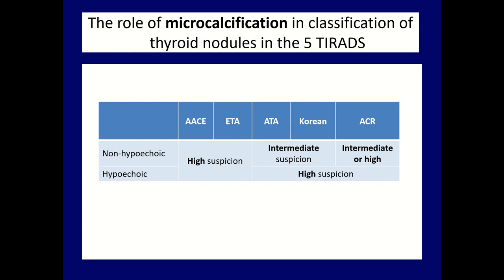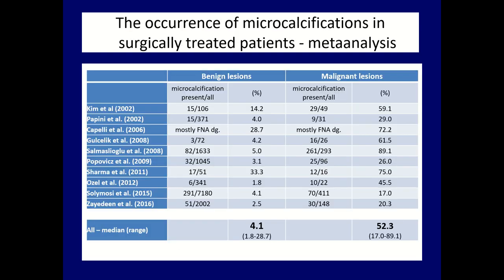These systems — mainly the ETA and the Korean systems — have a different approach compared to the former two TIRADS systems: the nodule can only be a high suspicion lesion if it is hypoechoic. According to around 10 publications in the literature, a benign lesion has a 4% chance of having microcalcifications, while a malignant nodule has around a 50% chance. The wide range reflects the huge inter-observer variability.